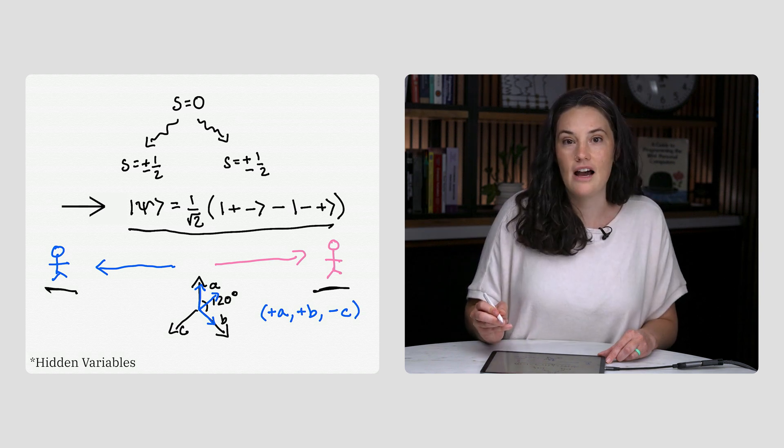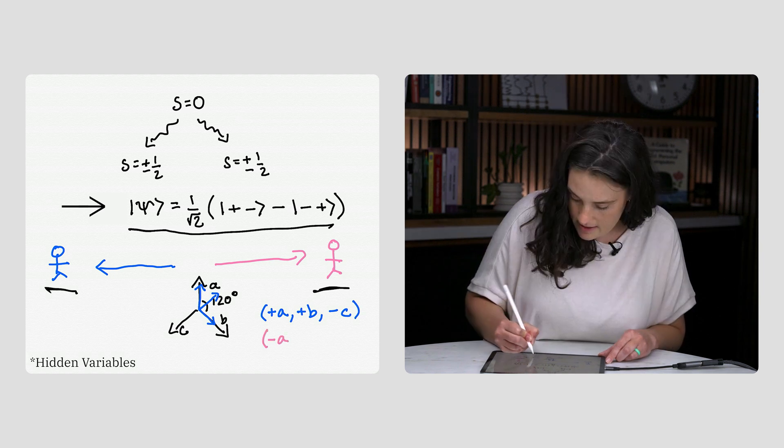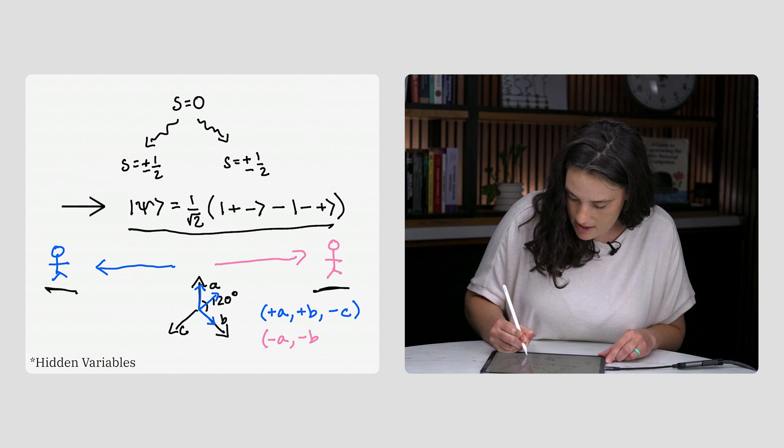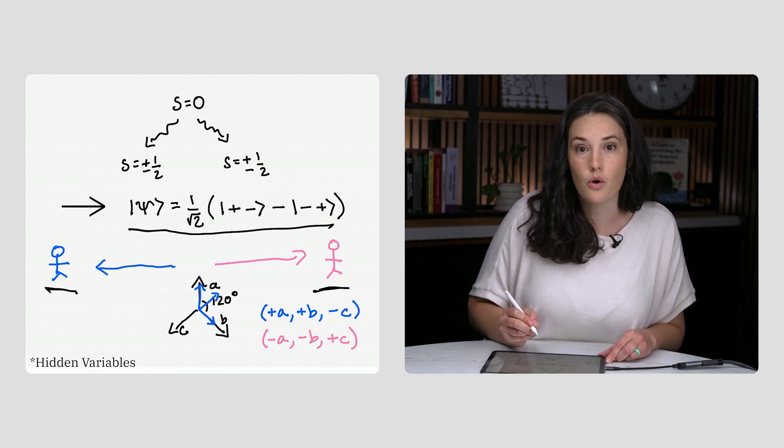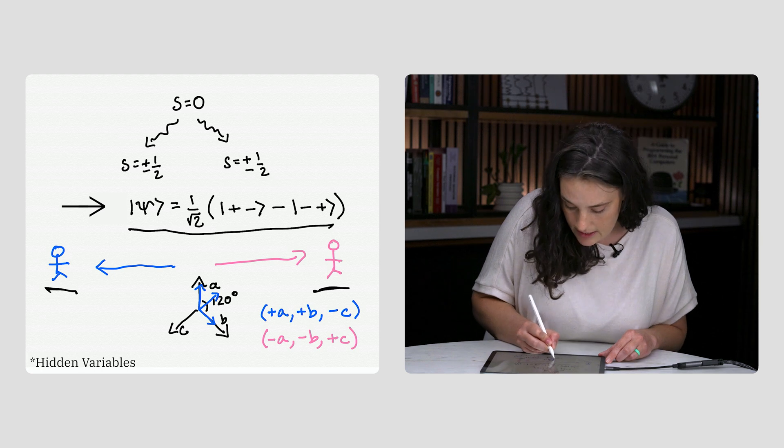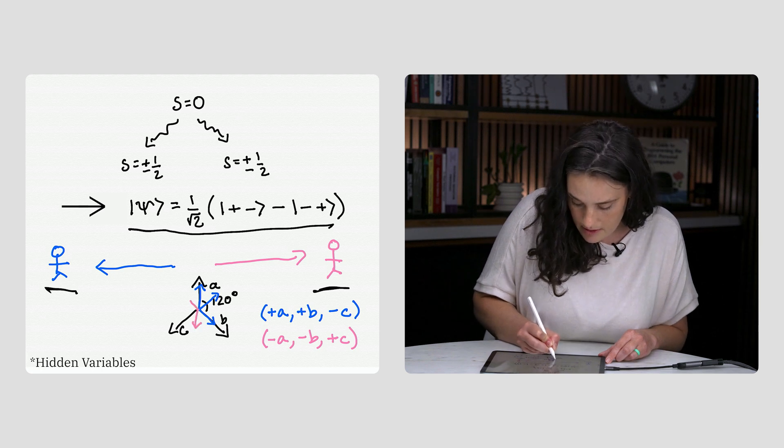Then Rihanna's particle would need to have the variables minus A, minus B, and plus C to make sure that the total spin along any single direction is zero.